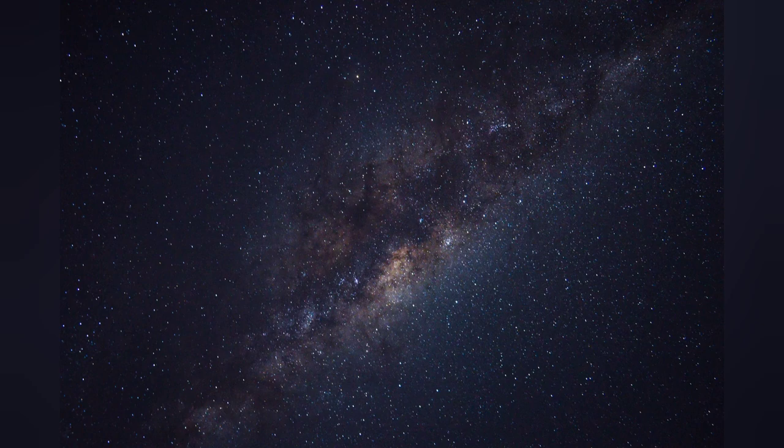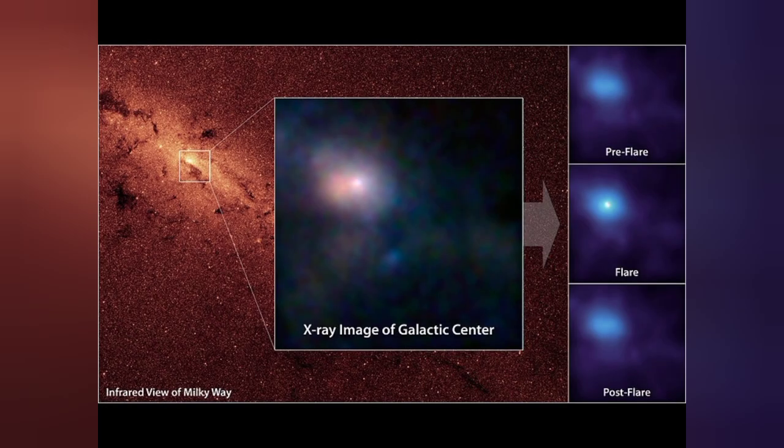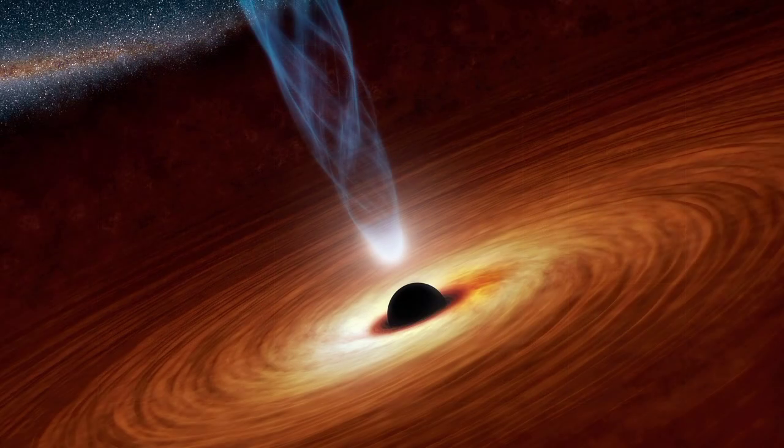Astronomers have identified that at the core of our Milky Way galaxy, the radio source known as Sagittarius A is a supermassive black hole of about 4.3 million solar masses. Supermassive black holes have been detected in other galaxies as well.